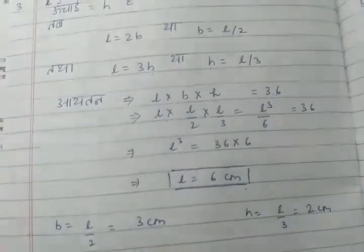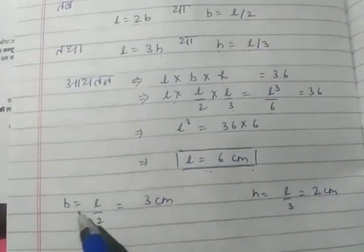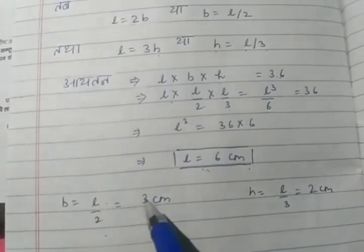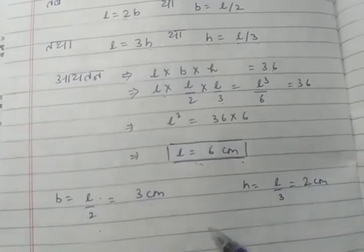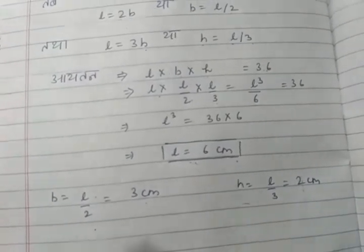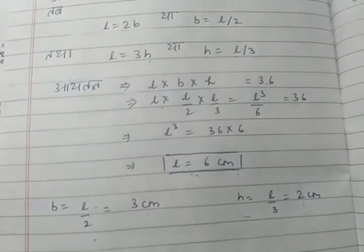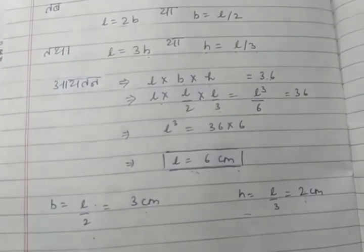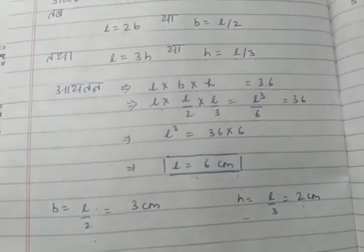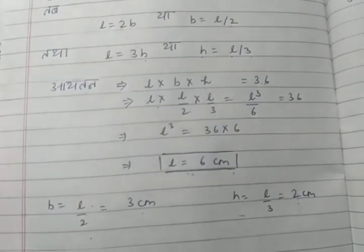From this we will find the length is 6 cm. With this help, we will find the others. Length is L/2, so 6/2 is 3 cm and the height is 2 cm. The length is 6 cm, the breadth is 3 cm and the height is 2 cm.